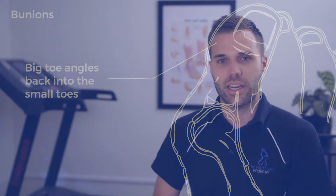You can also get a bunion in the fifth metatarsal phalangeal joint, and this is known as a bunionette.